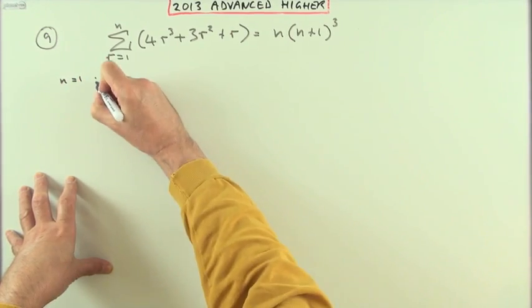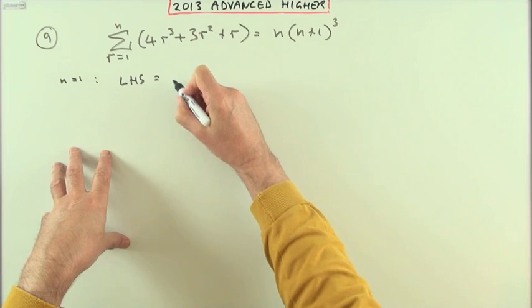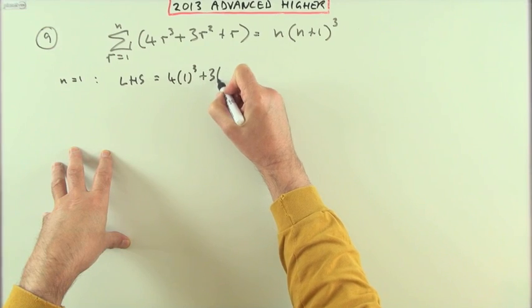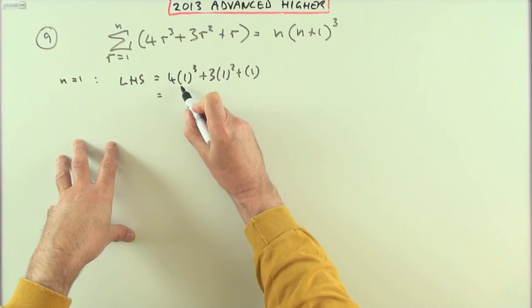If n is 1, what have I got for this? What would the left-hand side be if n is 1? It simply means I'll have the term here when r is 1, so it'll be 1 cubed plus 3 times 1 squared plus 1. That's as far as it goes, just the first term, so that's 4 plus 3 plus 1, which is 8.